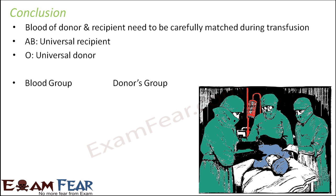Now let us quickly look at the different blood groups and their donor groups. If the blood group is A, who can donate? A and O. If the blood group is B, who can donate? B and O. If it is AB, everybody can donate because AB is the universal acceptor. And if it is O, only O can donate.